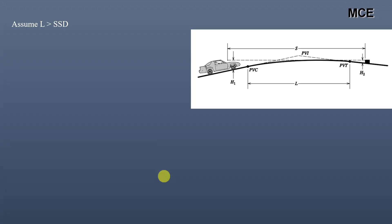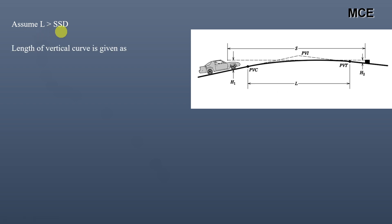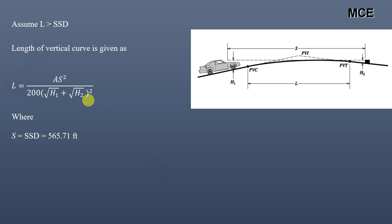Now we must assume whether the length of the vertical curve is greater than or less than the stopping sight distance, then use the AASHTO formula accordingly. We will first assume that the length of the vertical curve L is greater than the SSD. When L is greater than SSD, the AASHTO formula is: L = A·S² / [200 · (√h1 + √h2)²], where A is the absolute difference of grade and S is the stopping sight distance.